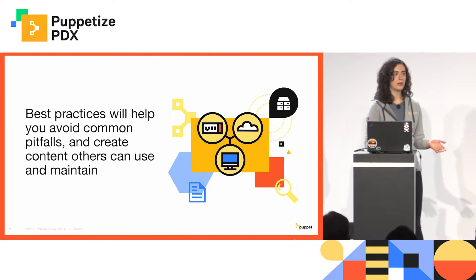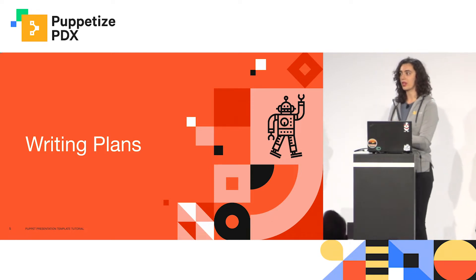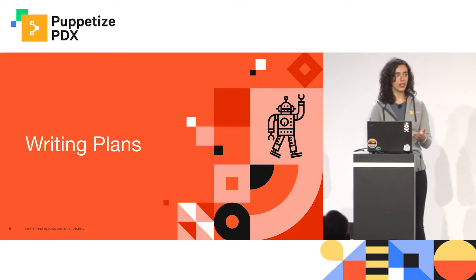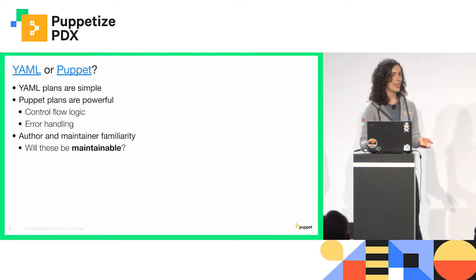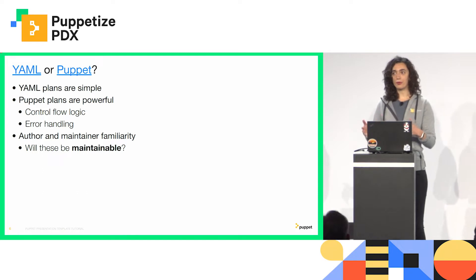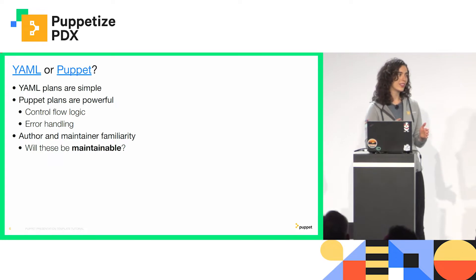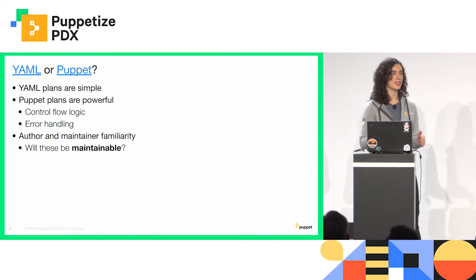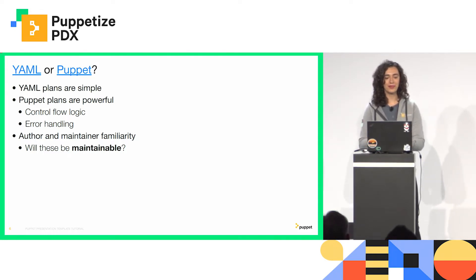The first topic I want to cover is writing plans, both the most interesting topic and one of the most common ones we get questions about. The first question you'll probably ask is: should it be in YAML or Puppet? The Bolt team doesn't prefer one over the other — we wrote both because both are really useful, and we fully support both. We're not only adding features to one.